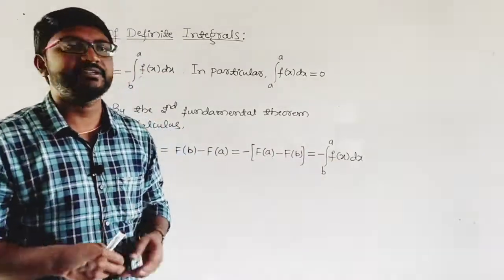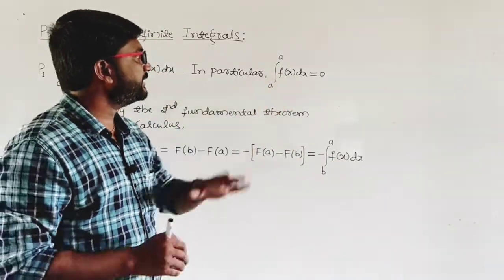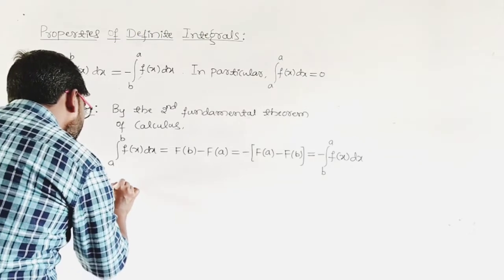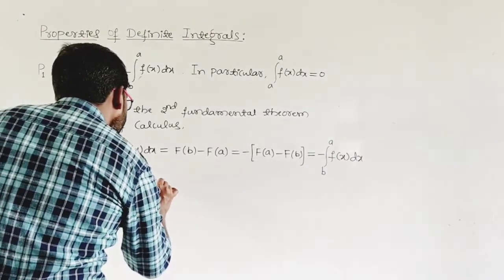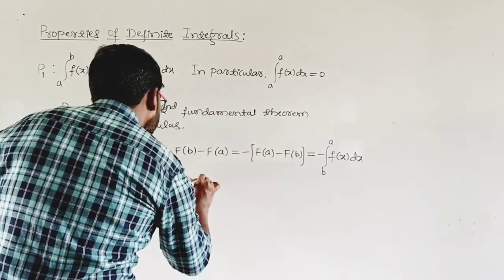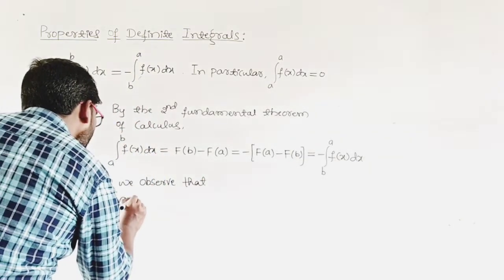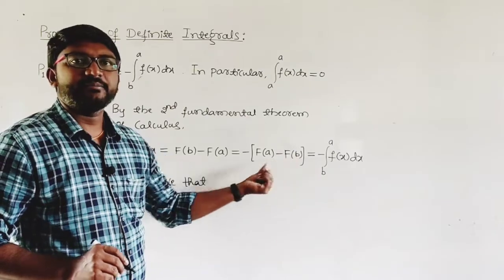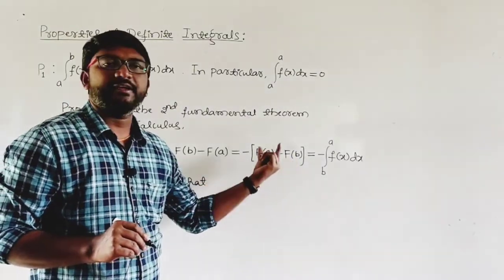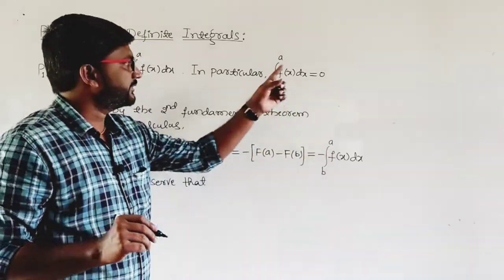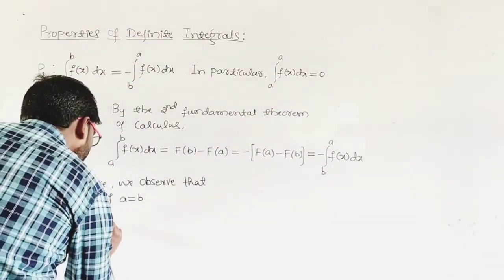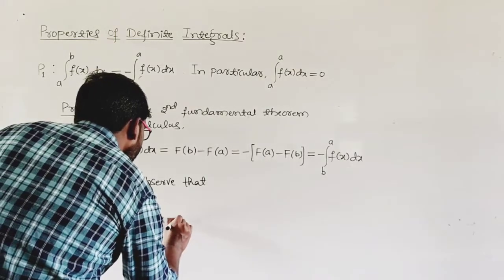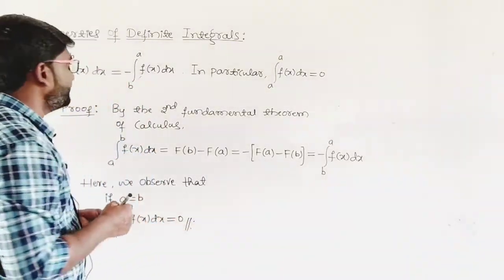For the sub-property: if a equals b, then in place of b we write a, so F(a) minus F(a) equals 0. Therefore integral a to a of f(x) dx equals 0. This completes the P1 property.